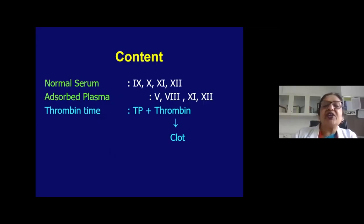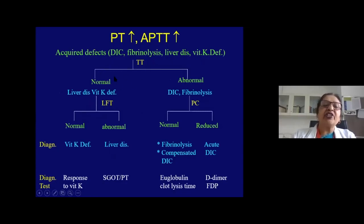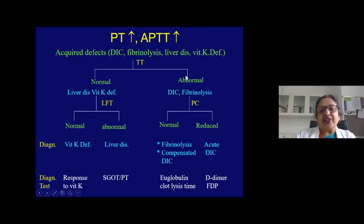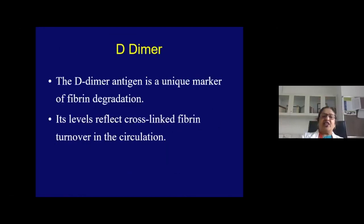For acquired conditions with both PT and APTT prolonged, consider DIC, fibrinolysis, liver disease, or vitamin K deficiency. If thrombin time is normal, suspect liver disease or vitamin K deficiency — check LFT, and if normal, trial of vitamin K can confirm vitamin K deficiency. If thrombin time is abnormal, consider DIC or primary fibrinolysis. Check platelet count: if reduced, suspect DIC and confirm with D-dimer or FDP; if normal, consider fibrinolysis and perform euglobulin clot lysis time.